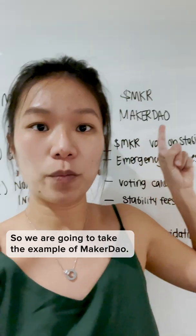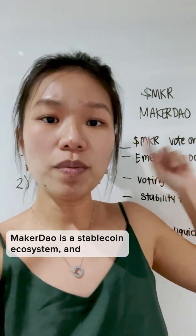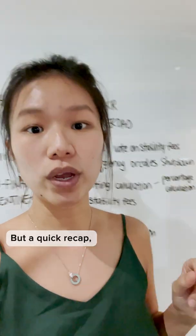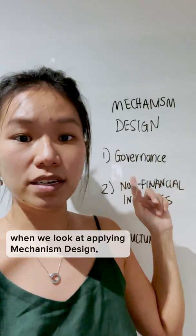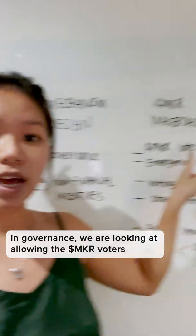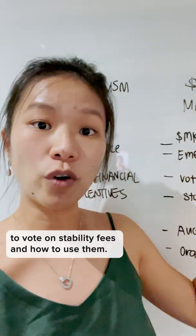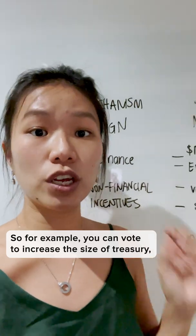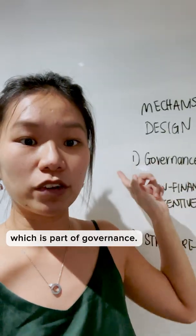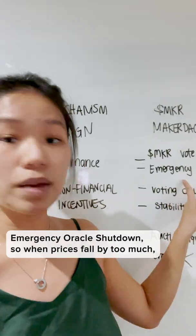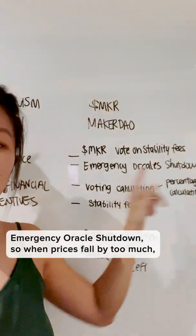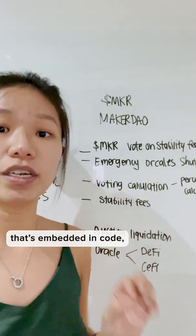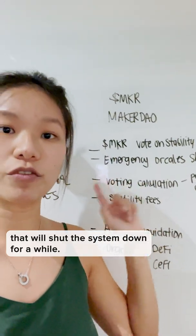So we're going to take the example of MakerDAO. MakerDAO is a stablecoin ecosystem — we have a video out there you can also watch to learn more about it. But a quick recap: when we look at applying mechanism design in governance, we're looking at allowing MKR voters to vote on stability fees and how to use them. For example, you can vote to increase the size of the treasury. The other more automated aspect is the emergency oracle shutdown — when prices fall by too much, this will happen. It's part of governance embedded in code that will shut the system down for a while.